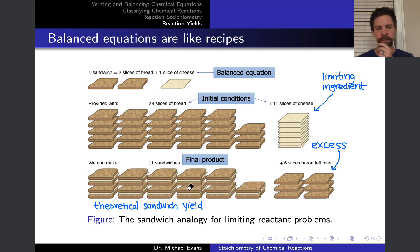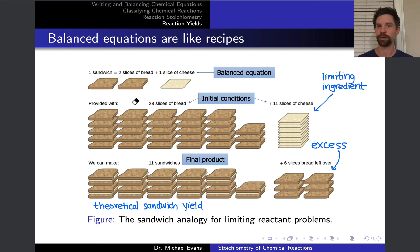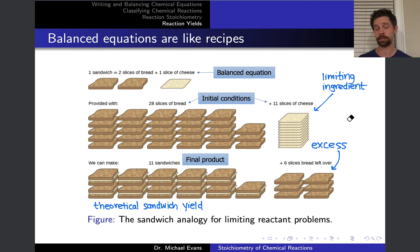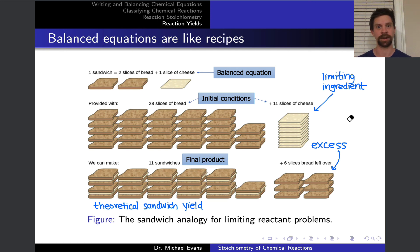With 28 slices of bread in isolation, we could hypothetically make 14 sandwiches, but the smaller number of sandwiches is associated with the limiting ingredient. In a chemical context, the smaller amount of product produced — or more generally, the smallest number of reaction events associated with a given reactant — identifies the limiting reactant. The smallest number of reaction events or smallest amount of product is always associated with the limiting reactant.